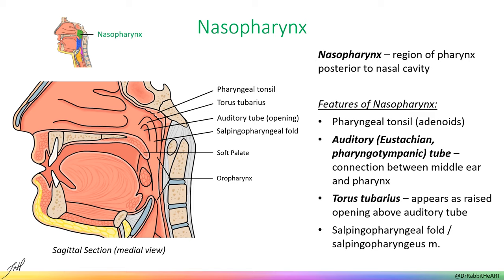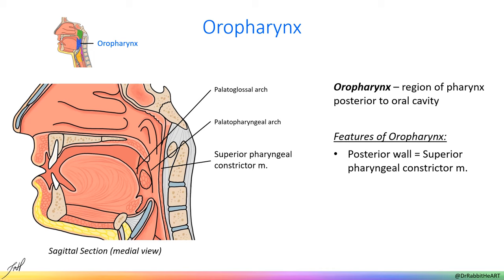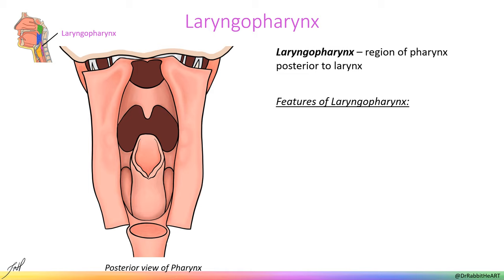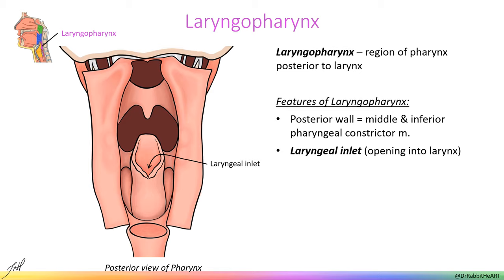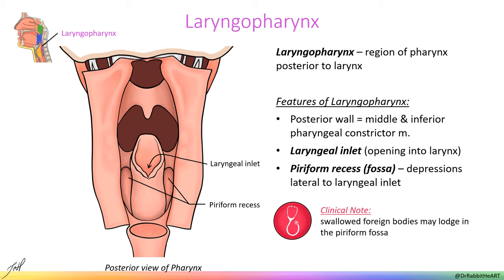The oropharynx is located behind the oral cavity, below the soft palate and above the epiglottis. The posterior boundary is formed by the superior pharyngeal constrictor muscle. The oropharynx contains the palatine tonsils and the posterior third of the tongue, including the lingual tonsil. The laryngopharynx is behind the larynx, below the epiglottis and extending to the inferior border of the cricoid cartilage. The middle and inferior pharyngeal constrictors form its posterior boundary. Contained within the laryngopharynx is the laryngeal inlet. Lateral to this inlet are depressions called the piriform recess or piriform fossa, a common site for foreign bodies to lodge.